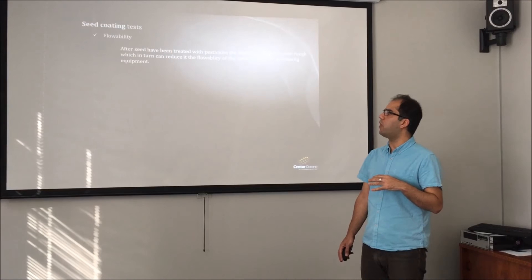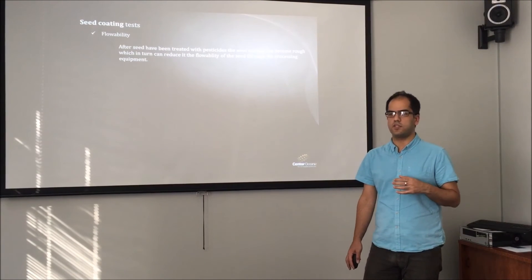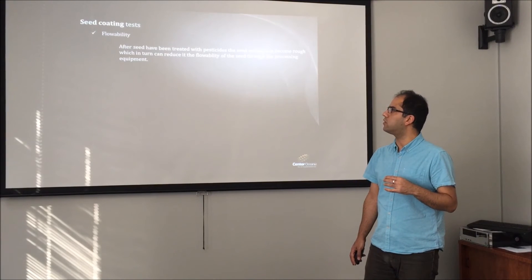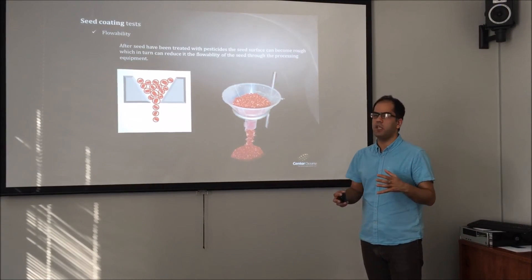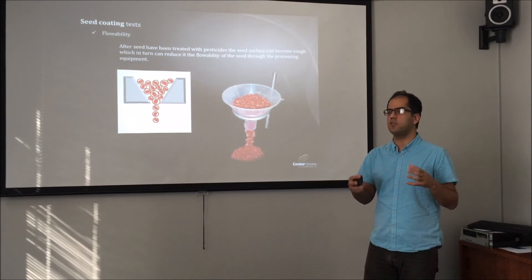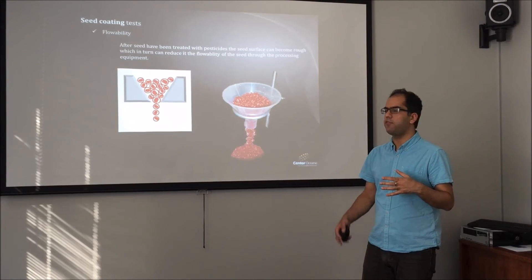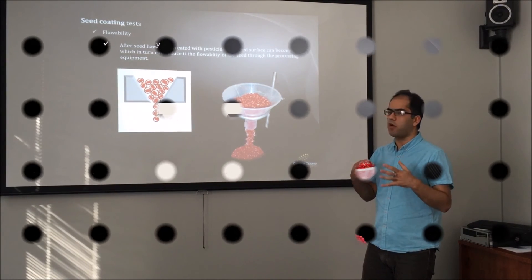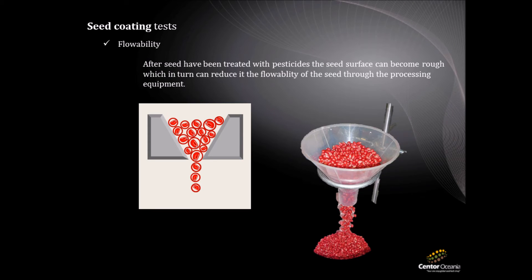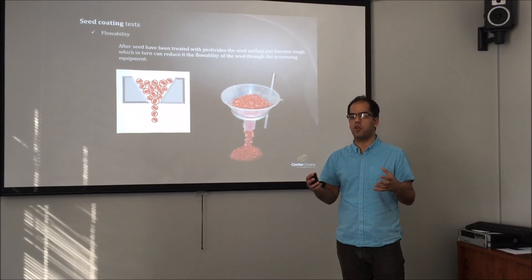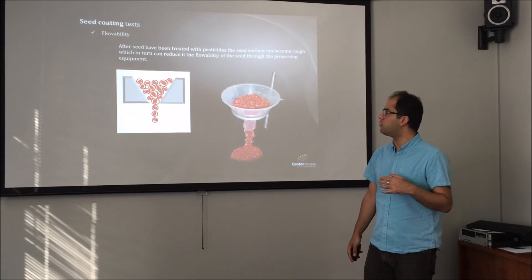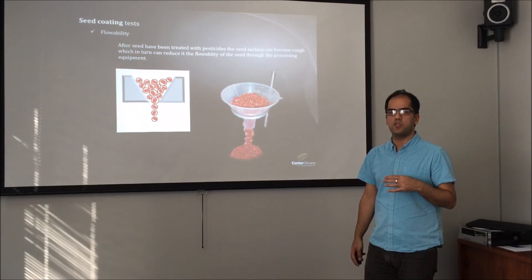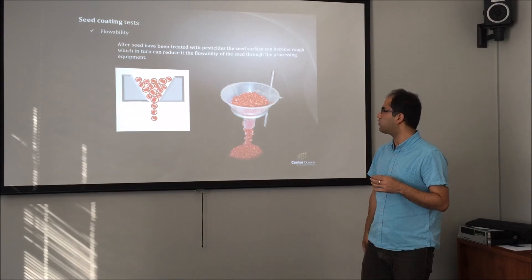Once the formulation is developed, it is applied onto the seed, and then different tests are performed on the coated seed. The first is flowability. It is important to see whether the coated seeds passing through instruments and processing equipment have a reduced or improved flow time compared to uncoated seeds. We use a funnel setup that measures the time a specific amount of seeds takes to pass through. This determines whether the polymer and applied pesticides are reducing or improving the seed flow time.